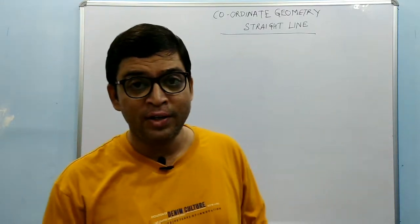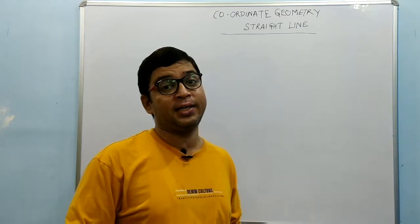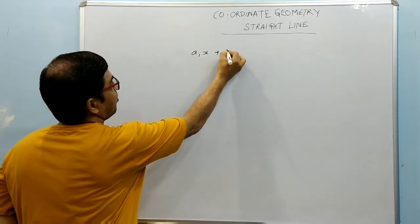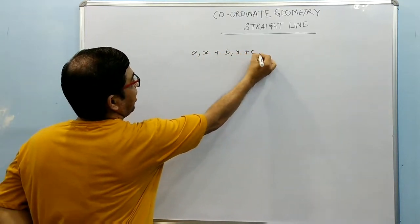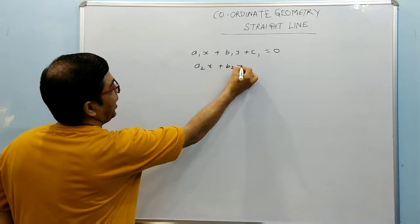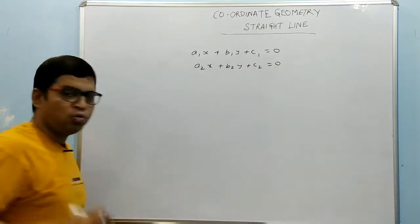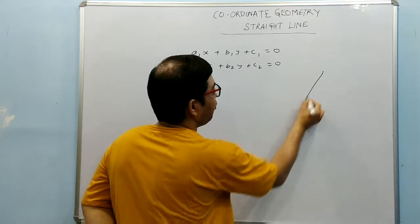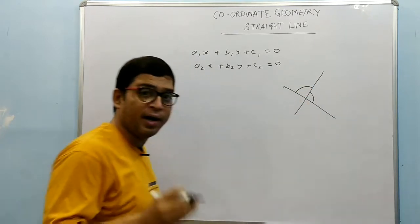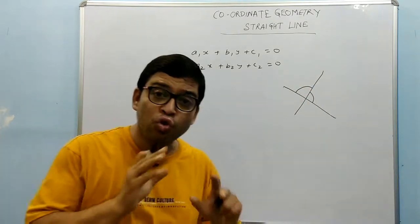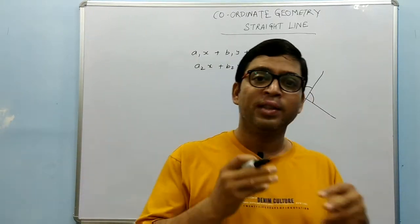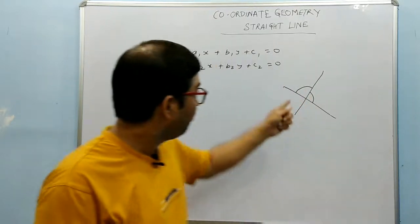Hello friends, we will now see angle bisector equations. Two lines are given: a1x plus b1y plus c1 equal to 0, and another line a2x plus b2y plus c2 equal to 0. Between two lines, two angles are formed — one angle here and one angle here — so two angle bisectors are there. We can easily find the equation of the two angle bisectors with the given lines.